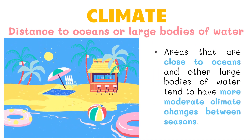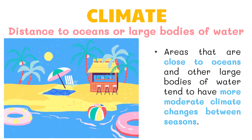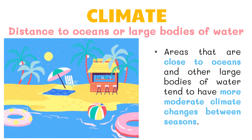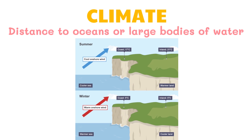Areas that are close to oceans and other large bodies of water tend to have more moderate climate changes between seasons. These areas also tend to have higher average precipitation than landlocked areas, although there can be exceptions. Landlocked areas — locations in the center of large land masses — tend to have drier climates and extremely high temperatures annually. Oceans heat up and cool down much more slowly than land. This means that coastal locations tend to be cooler in summer and warmer in winter than places inland at the same latitude and altitude.